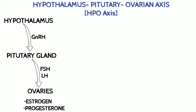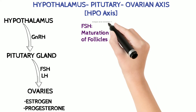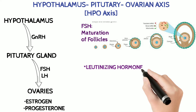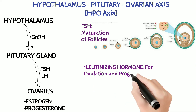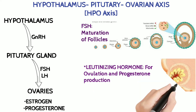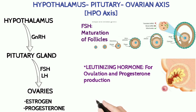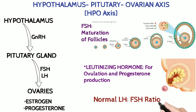The function of FSH is to help in development of the primary follicle into the Graafian follicle, whereas LH helps in ovulation and maintenance of the corpus luteum. One more important point to note is that, in normal conditions, the ratio of LH to FSH is nearly around 1.5 to 1.